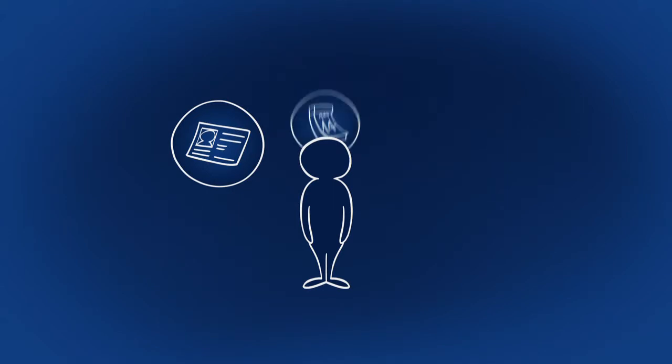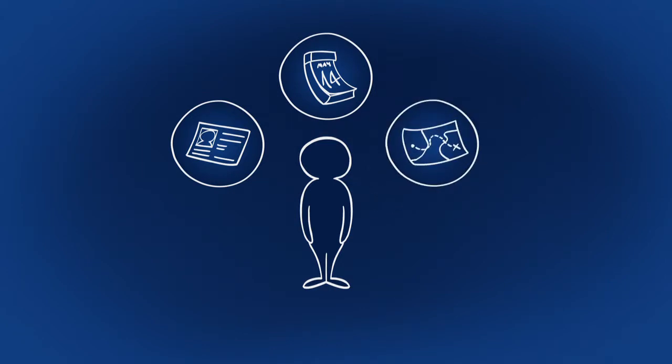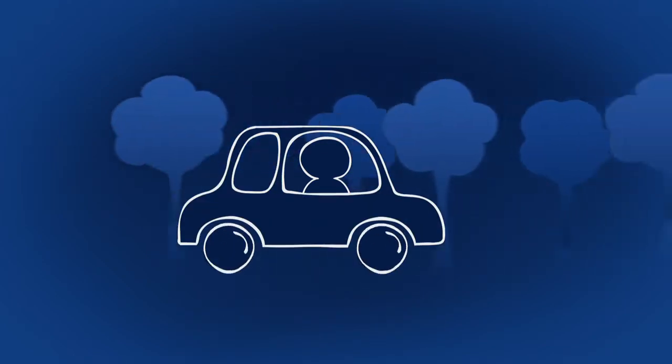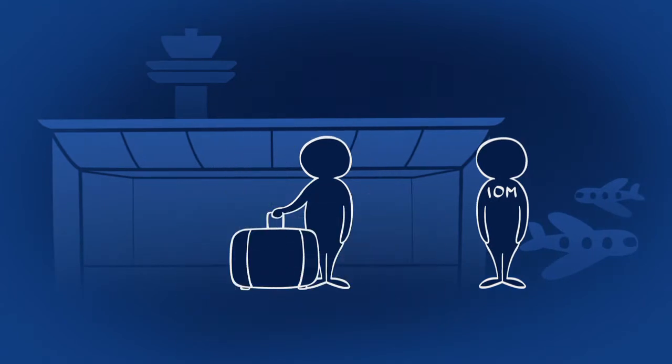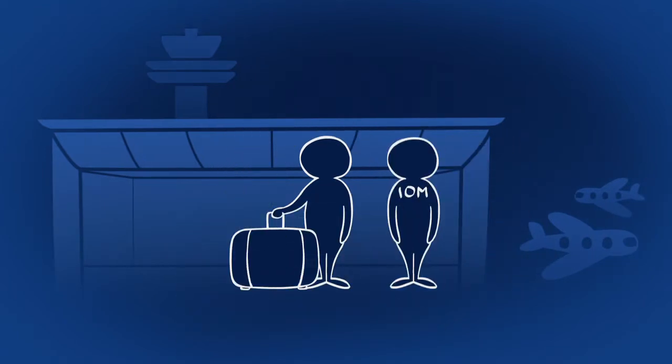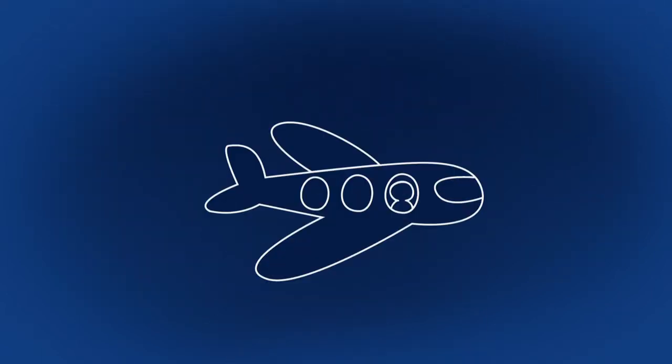We will inform you in advance of the intended date of departure, itinerary, flight number, and transit assistance. On departure from Poland, we will assist you in getting to the airport or railway station where an IOM staff member will provide you with all the necessary assistance. At the airport, IOM staff will accompany you during check-in and passport control. You will travel back home as an ordinary passenger.